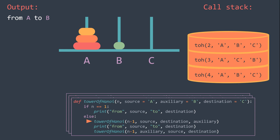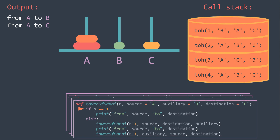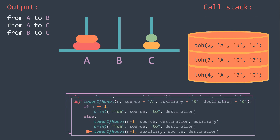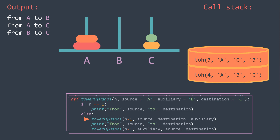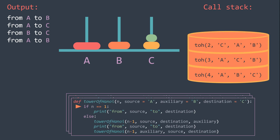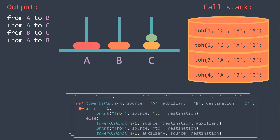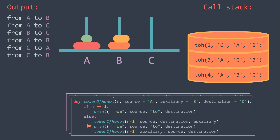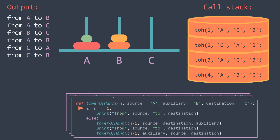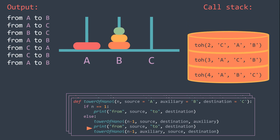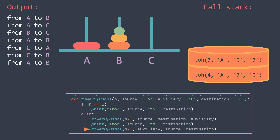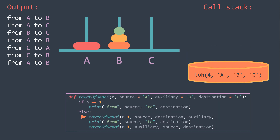We went back to the previous call, and now we print: we move from source to destination — here source is A and destination is C. Now the third step of the call, we call the function with N-1, and source and auxiliary are swapped. N is equal to 1, so we print, and we backtrack. Now we finish this function call, so we backtrack. Back to the call with N equal to 3, now we print and we call the function with N-1, and source and auxiliary are swapped. N is not equal to 1, so we call with N-1 and auxiliary and destination switched. N is equal to 1, so we print and we backtrack. We continue in our call, we print, and we call with N-1 and source and auxiliary swapped. N is equal to 1, we print and we backtrack. We finish this call, so we backtrack. We also finish this call, so we backtrack. Now we went back to the first call, so we finish the first part.